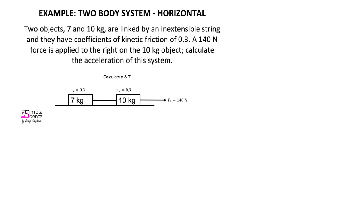Two-body systems on a horizontal surface are solved in exactly the same way as any other two-body system. We start by drawing a free body diagram for each object. For the seven kilogram object, we show that there is a force of gravity acting downward, a normal force acting upward, and a tension force acting to the right. We've been told there is a coefficient of friction, which means there is a friction force acting to the left.